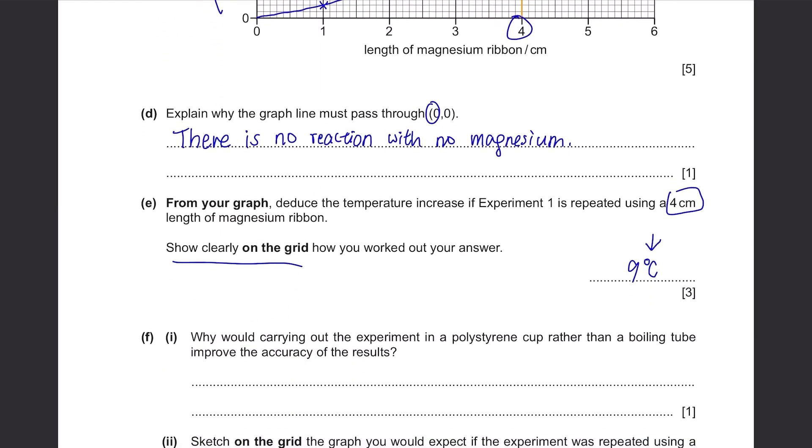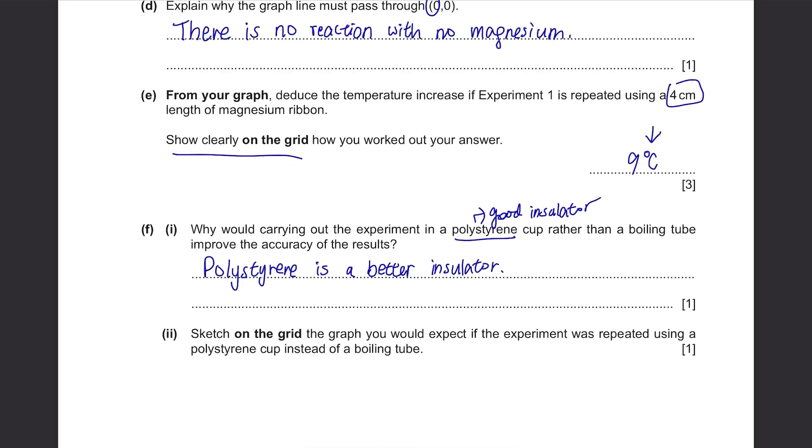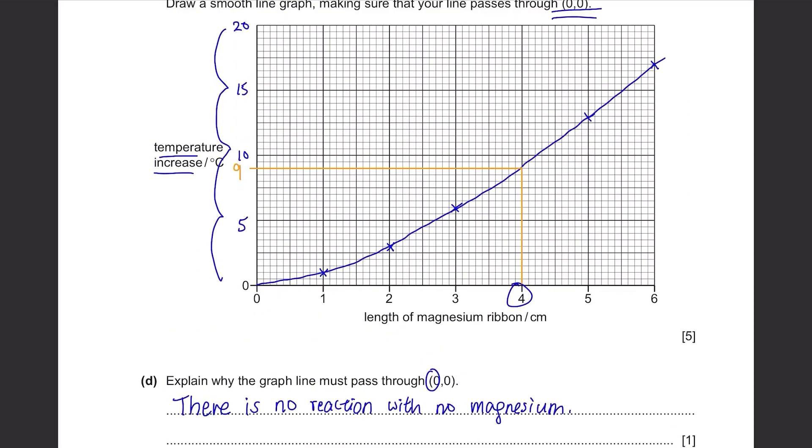Part F: Why would carrying out the experiment in a polystyrene cup rather than a boiling tube improve the accuracy of the result? That is because polystyrene is famous for being a good insulator, so there will be less heat lost to the surroundings by radiation and we'll be able to get more accurate readings. Sketch on the grid the graph you'd expect if the experiment was repeated using a polystyrene cup instead of a boiling tube. Since polystyrene can retain heat better, there will be higher increase in temperature.